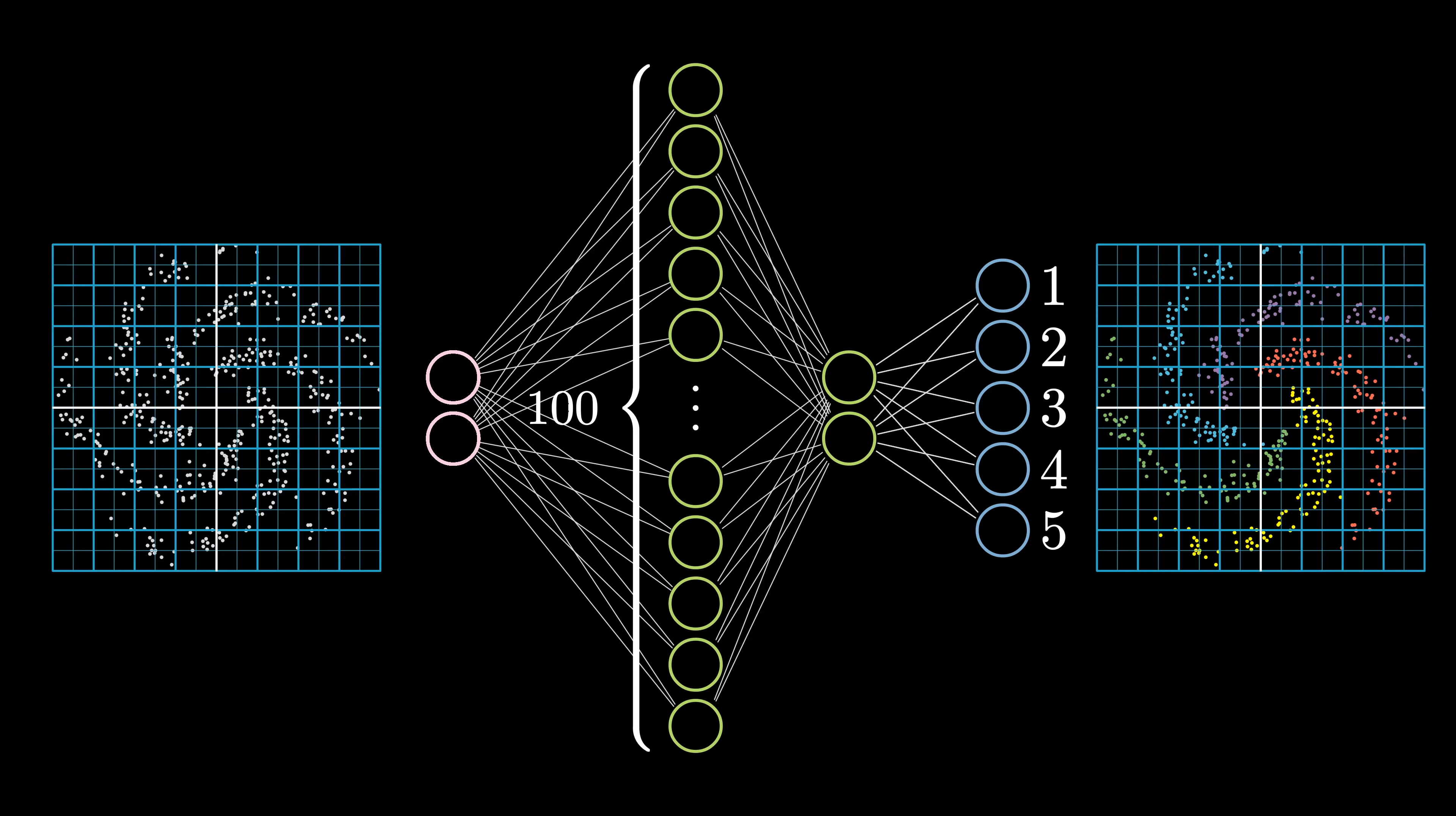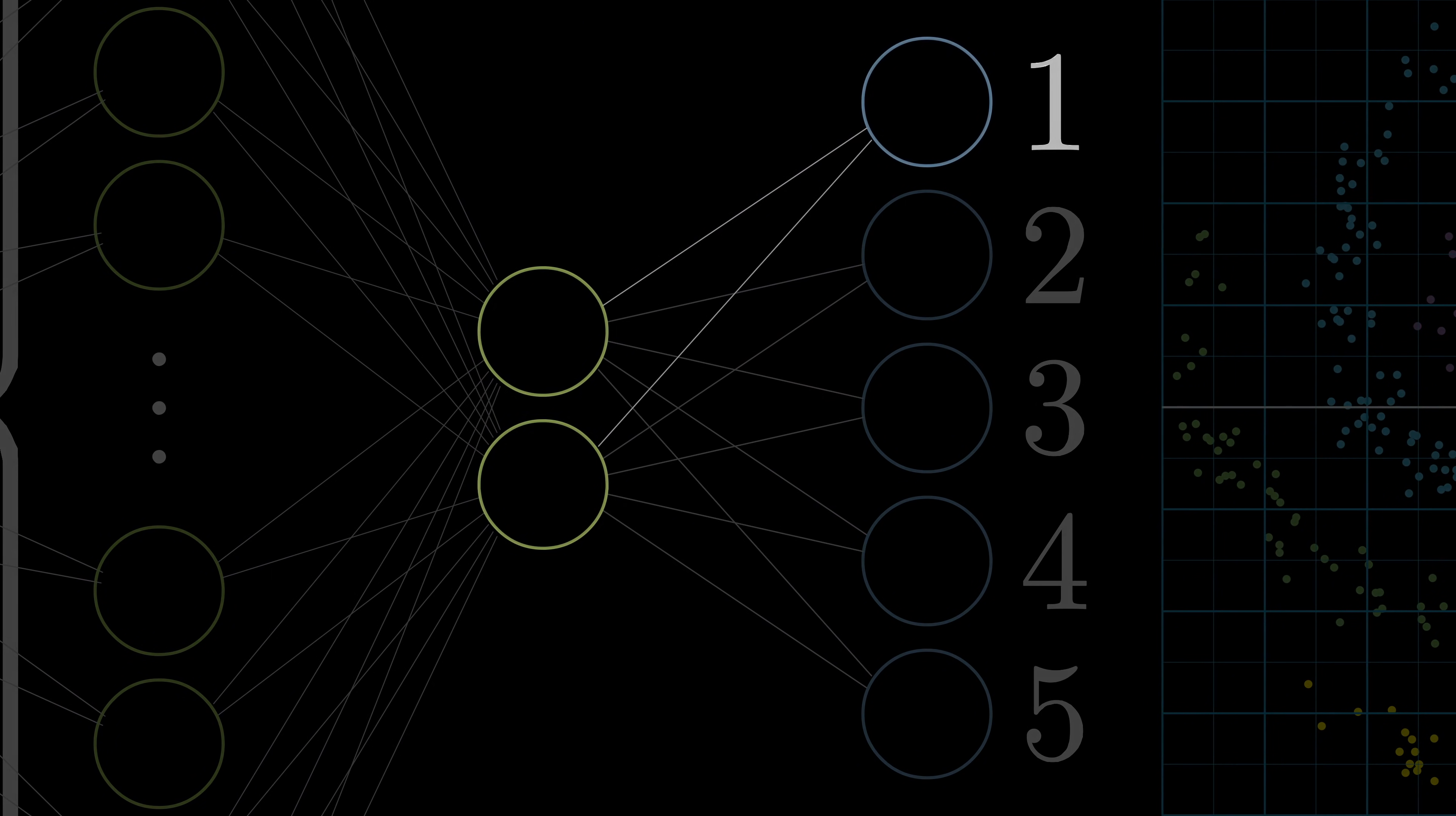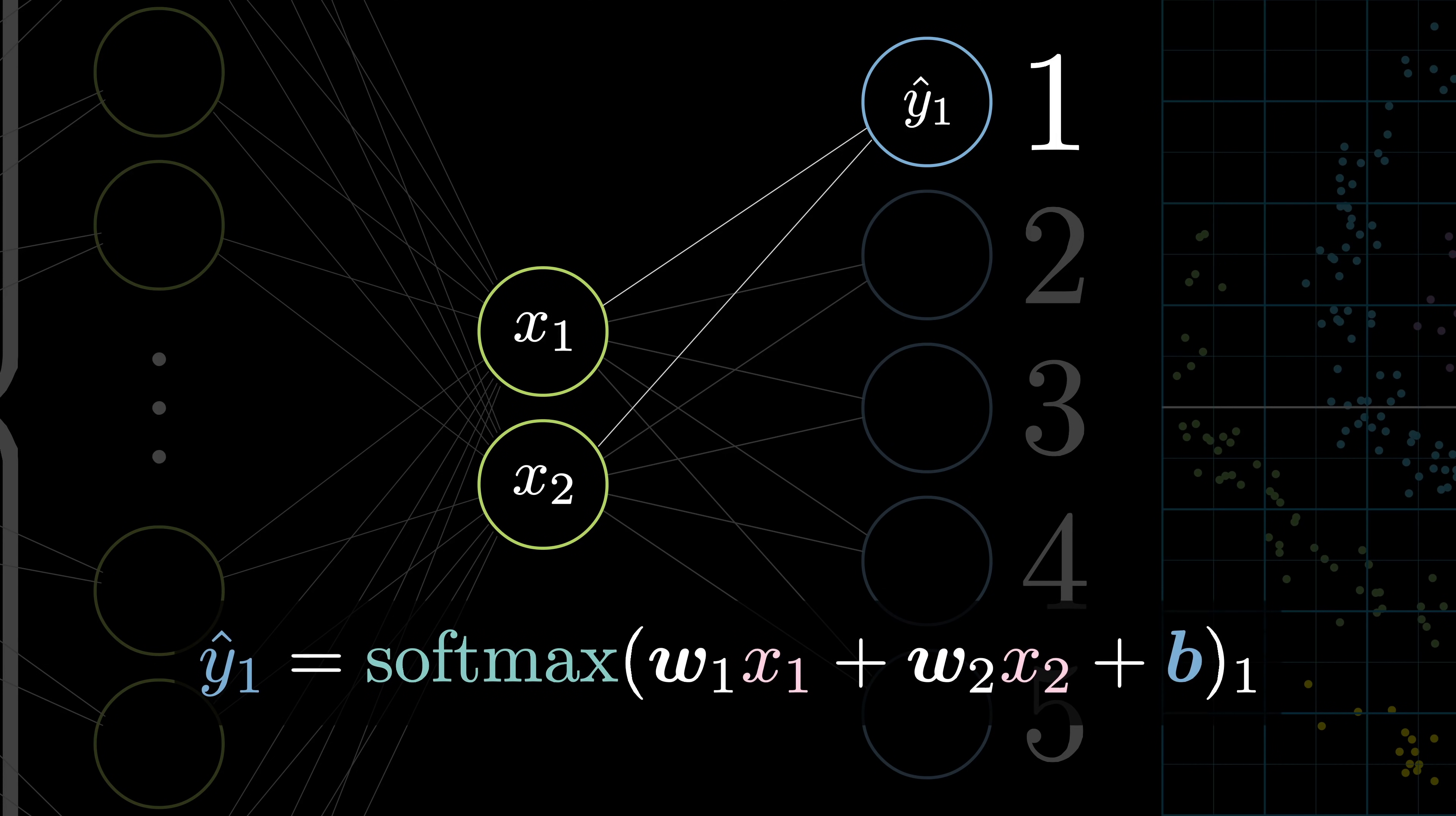Let's go back to the diagram for the 2-100-2-5 neural network. If we look at the top neuron in the final layer, we know its value is the first element of softmax of wx plus b, which we can write out as softmax of w1x1 plus w2x2 plus b1.